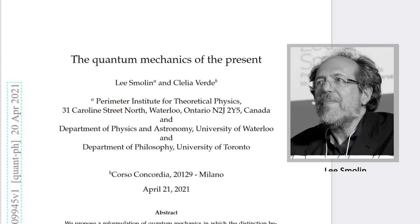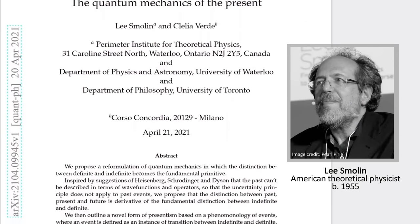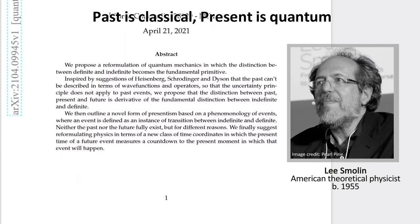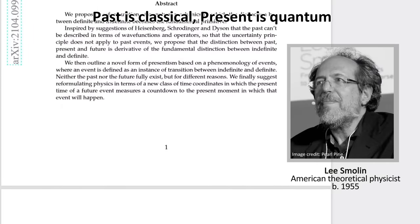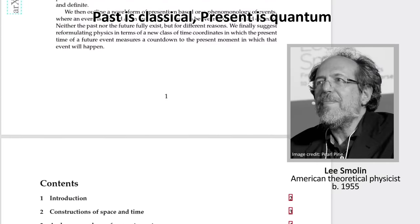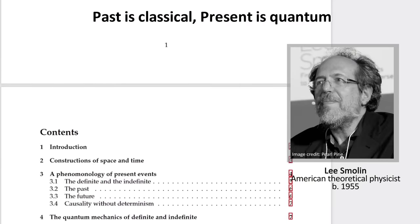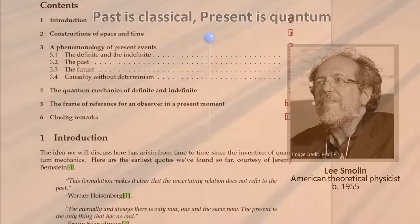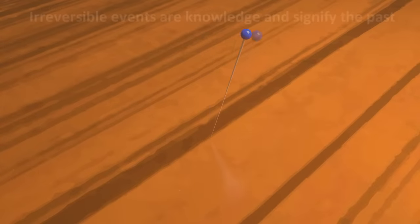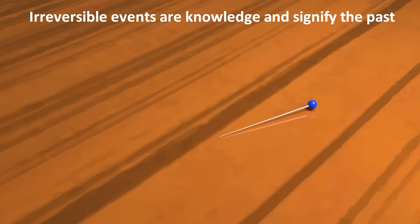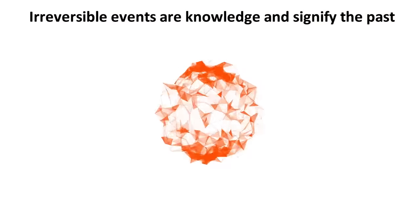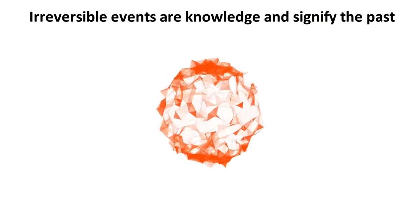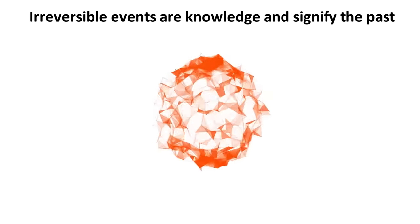Physicist Lee Smolin has recently suggested that this is in fact what distinguishes the past from the present. The past, he says, is completely classical. It consists of things that definitely happened and can never unhappen. The present, though, is quantum. It's still unfolding. What seems to separate them, then, is not just whether they are reversible or not, but whether they are knowable or not. Whether they have become actual knowledge. Something of which we can say it was like this.